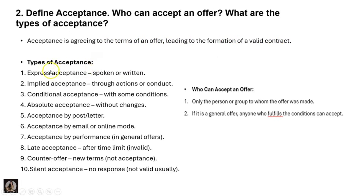Types of acceptance: express acceptance means spoken or written type; implied acceptance means through actions or conduct; conditional acceptance means some conditions are attached; absolute acceptance means without any changes — you accept the offer as it is. If you add any conditions, it becomes conditional acceptance. Acceptance by post or letter is also a type.